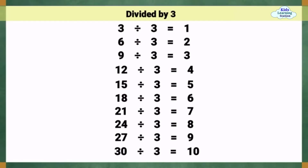Divided by 3. 3 divided by 3 equals 1. 6 divided by 3 equals 2. 9 divided by 3 equals 3. 12 divided by 3 equals 4. 15 divided by 3 equals 5. 18 divided by 3 equals 6. 21 divided by 3 equals 7. 24 divided by 3 equals 8. 27 divided by 3 equals 9. 30 divided by 3 equals 10.